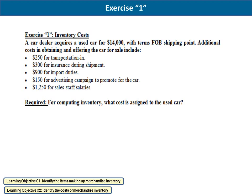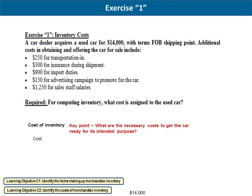To determine the cost of an inventory, we include two items: the purchase price and any costs necessary to bring the asset to a state ready for use. The $14,000 is the purchase price — the first item we include. Don't forget that if there is a purchase discount in the exercise, you should subtract it from the cost; but here we don't have a purchase discount.